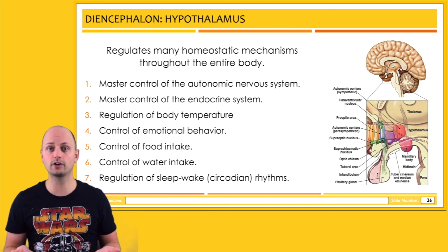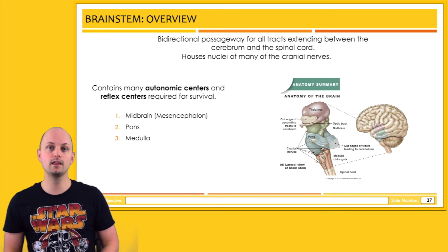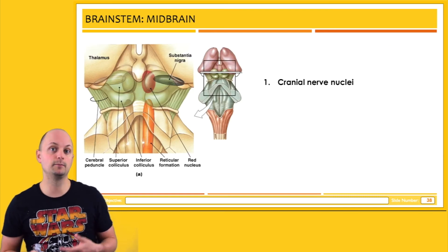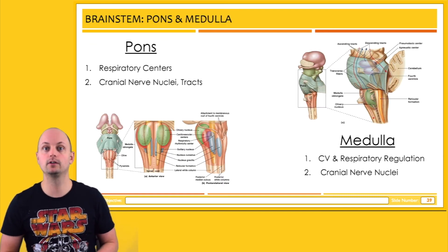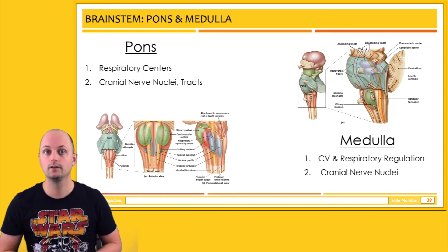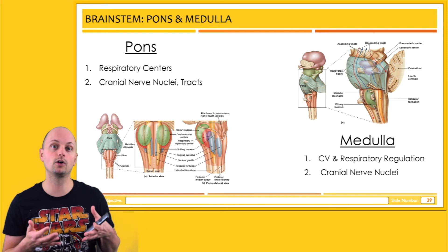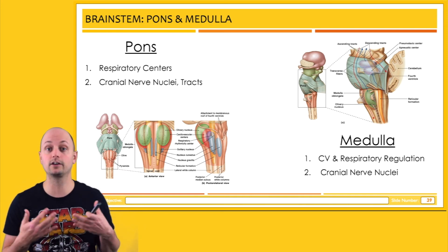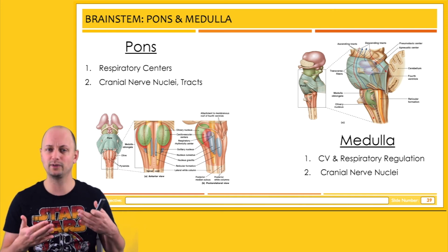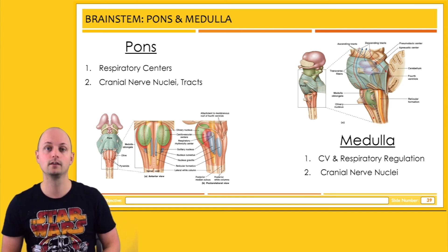The midbrain also contains two structures known as the colliculi, which coordinate some visual and some auditory reflexes. The pons is really important for respiration. The medulla is also important for regulation of the respiratory system, and that region also contains the cardiovascular control systems — so again, really basic functions: breathing and heart function.